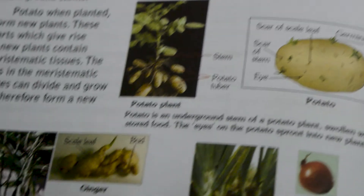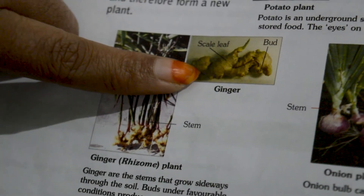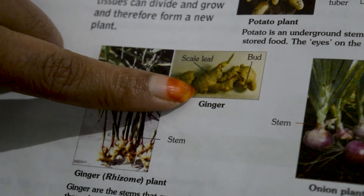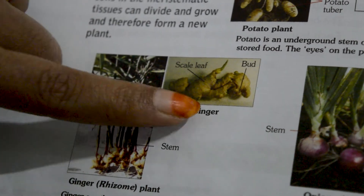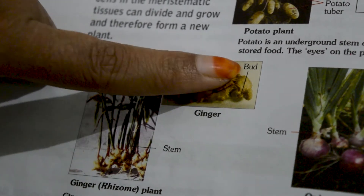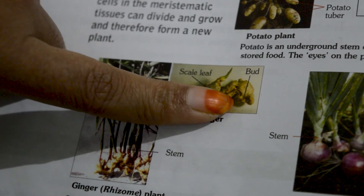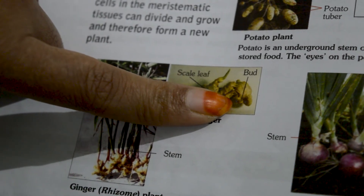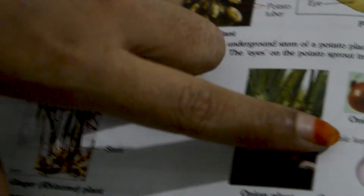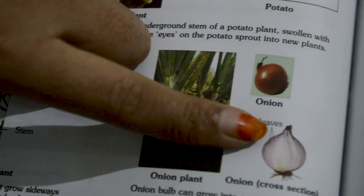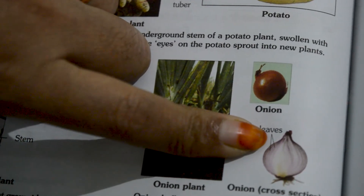This germinating eye bud develops into a new plant. If you observe ginger, when it is kept in the soil, small buds are produced. These buds under favorable conditions produce new plants. Similarly, the onion bulb can also grow into a new plant.